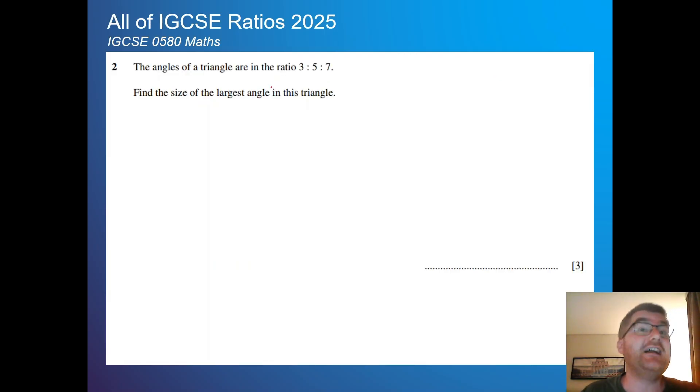On to question 2. This was actually on one of my community posts the other day. So the angles of a triangle are in the ratio 3 to 5 to 7. I want to find the size of the largest angle. So again, I write 3 to 5 to 7. And remember, the angles in a triangle add up to 180 degrees.